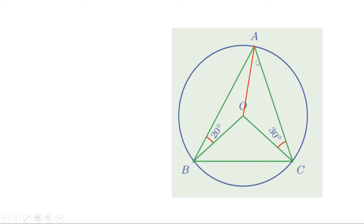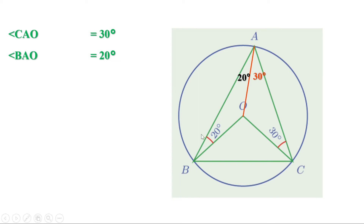Therefore these two base angles are equal. Since one angle is 30 degrees, the other is also 30 degrees — that is, angle CAO equals 30 degrees. Similarly, triangle AOB is also isosceles; since one angle is 20 degrees, angle BAO equals 20 degrees. So angle BAC equals 20 plus 30, which is 50 degrees. Therefore the central angle BOC is 100 degrees.